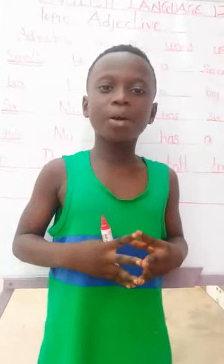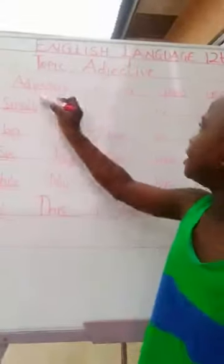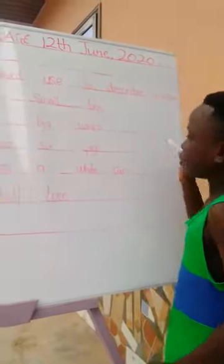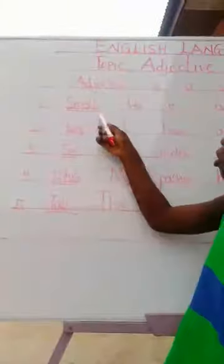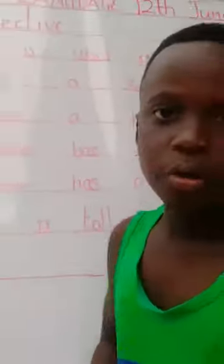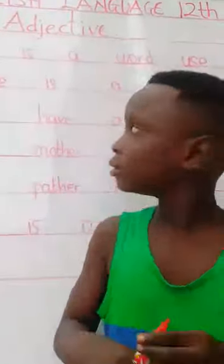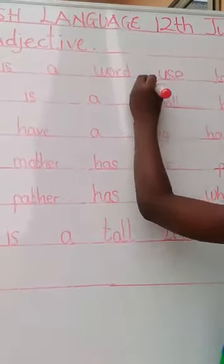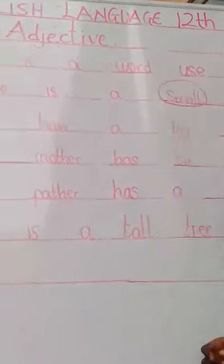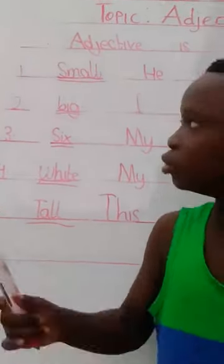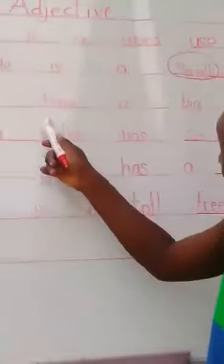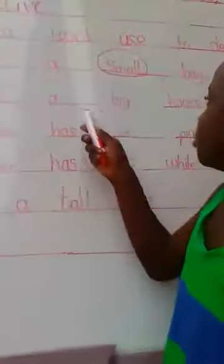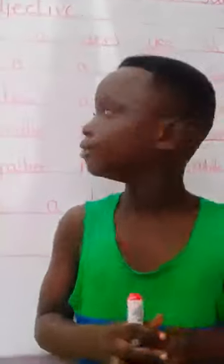Let's go back once again. Adjective is a word used to describe a noun. Small — he is a small boy. Which one is the adjective? Small. So small is the adjective. Example two: big — I have a big house. Which one is the adjective? Big. So big is the adjective.